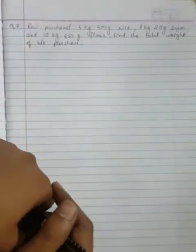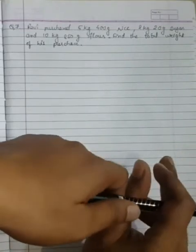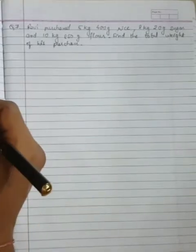Now coming to question number seven. Ravi purchased 5 kg 400 grams rice, 2 kg 20 grams sugar and 10 kg 850 grams flour. Find the total weight of his purchase.